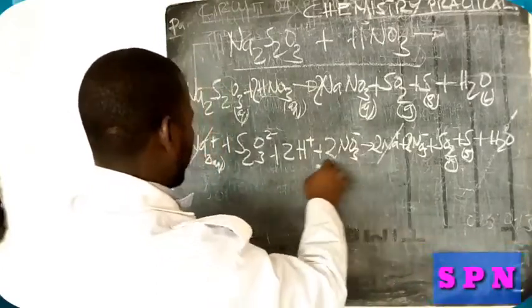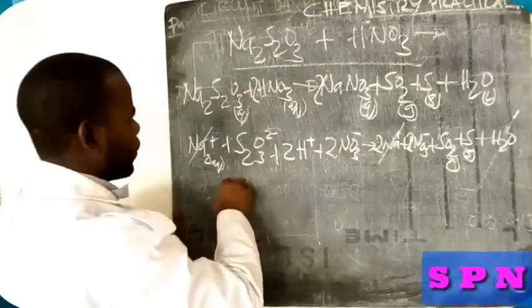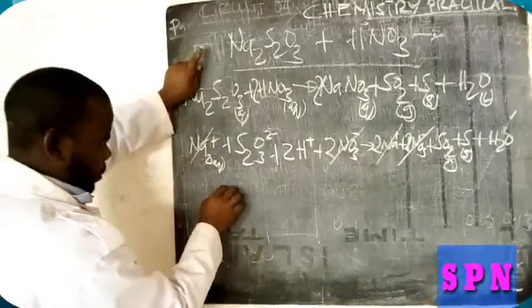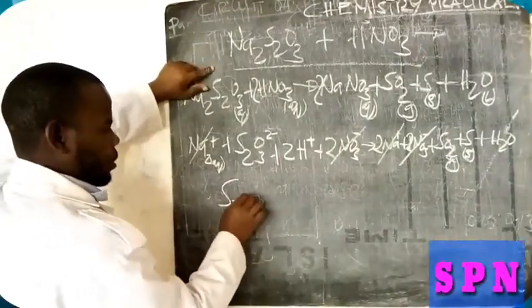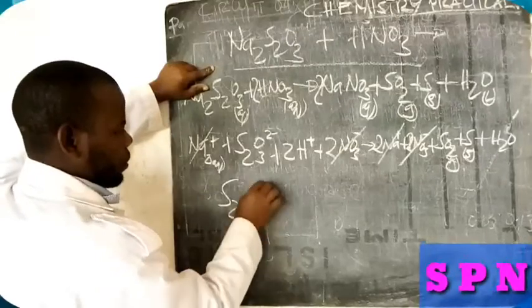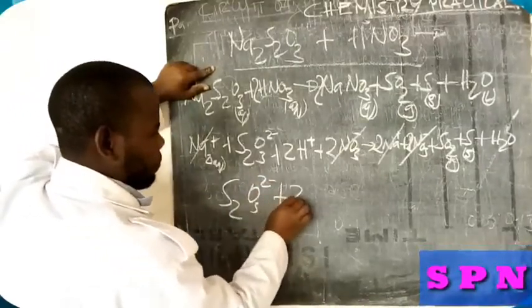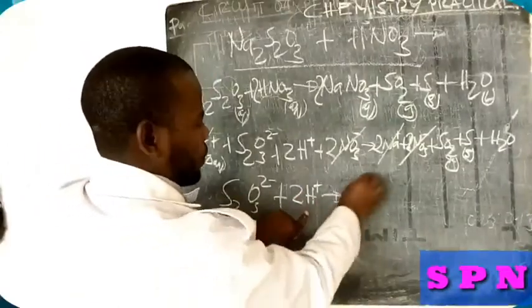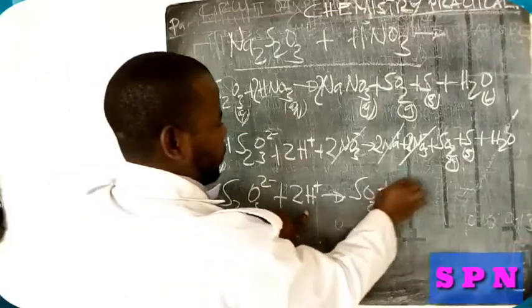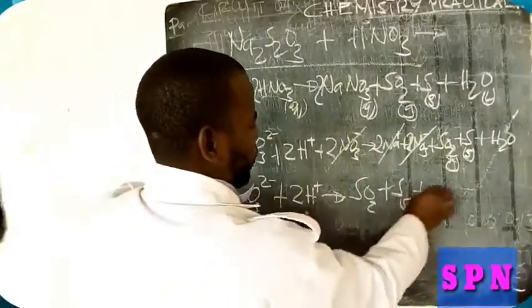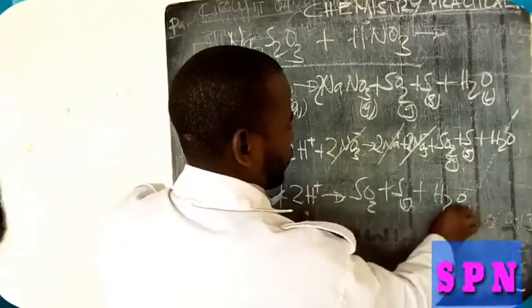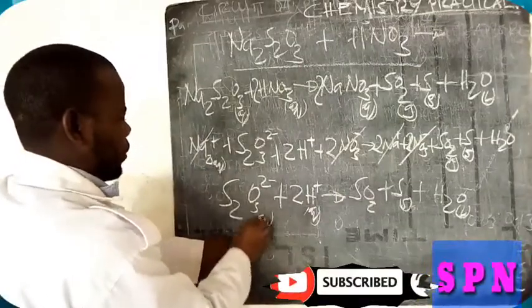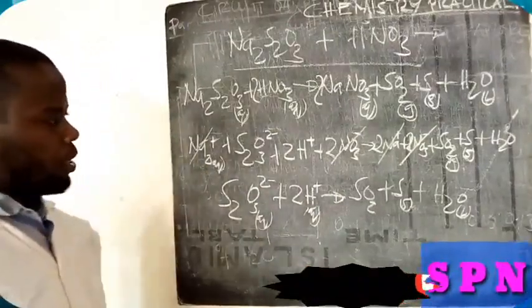After the ionic equation, it will be SO3^2- plus 2H+ gives SO2 plus S plus H2O. That's sulfur dioxide, that's sulfur, that's water which is liquid. That is the reaction between sodium sulfate and nitric acid in ionic equation. That is one way.